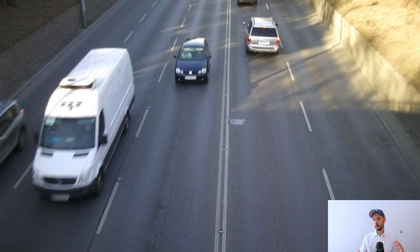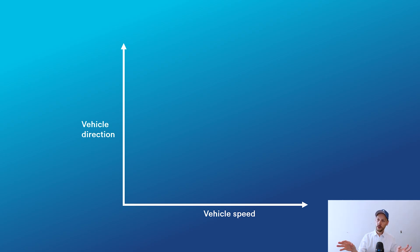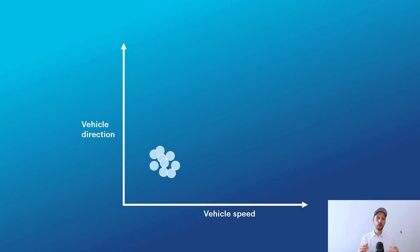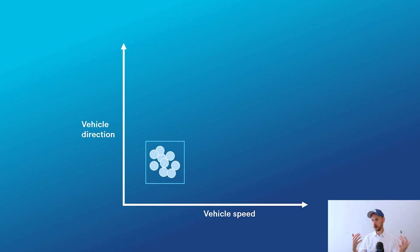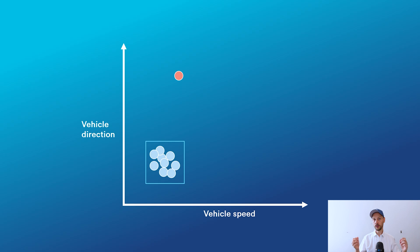To do this, we take two parameters from the scene: vehicle direction and vehicle speed. We measure these and plot them on a graph. All the vehicles drive a certain speed and a certain direction — and then we do what is called clustering. We figure out that all those points probably belong together because they're so close, forming a cluster — this is how it's supposed to be. And then suddenly there's a data point way off, meaning a car is going in a different direction, maybe at a different speed. We can clearly see it's different from the rest, so we trigger an alarm.